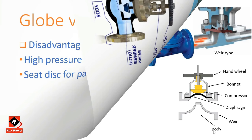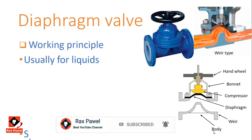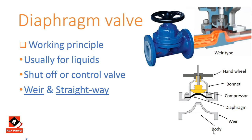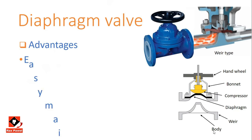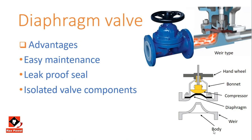Diaphragm valve working principles: it has a diaphragm moved by a compressor with the aid of a stem. Most of the time it is used for liquids, acting as both a shut-off valve and a control valve. There are two types: weir and straightway, with the weir type being most commonly seen. The pinch valve is an improvement of the diaphragm valve working on the same principle. Advantages: maintenance is very easy and it provides a leak-proof seal. Most importantly, valve components are isolated from the process fluid by the diaphragm, providing safety for valve components.